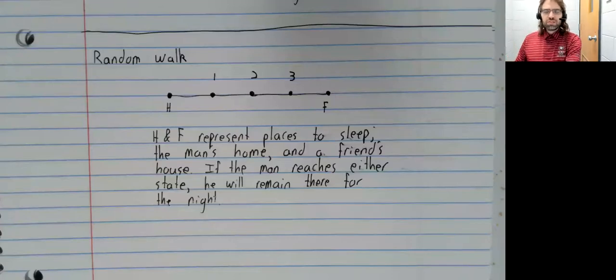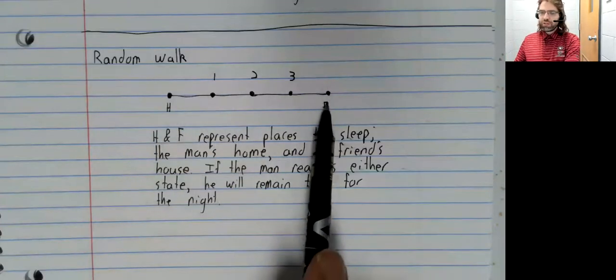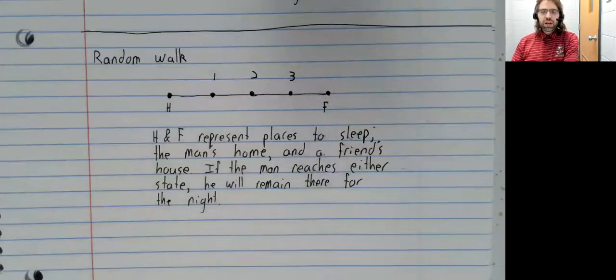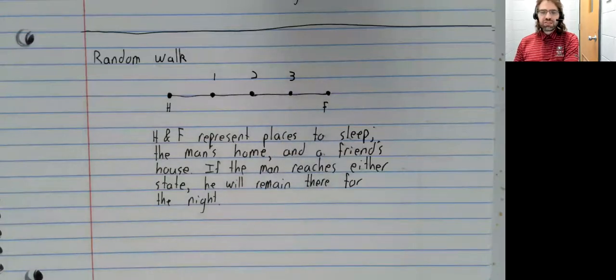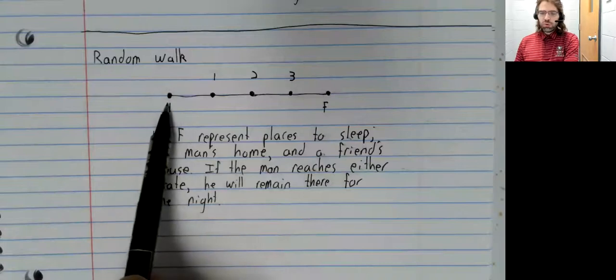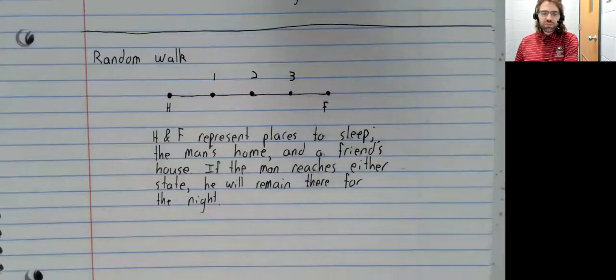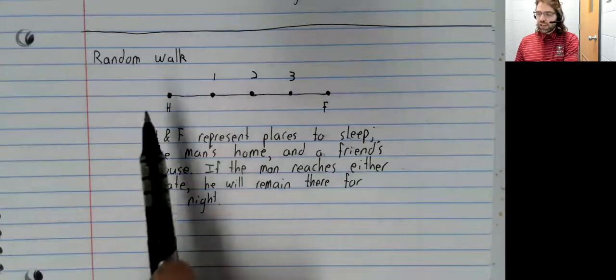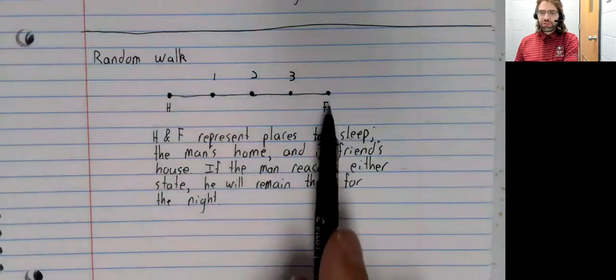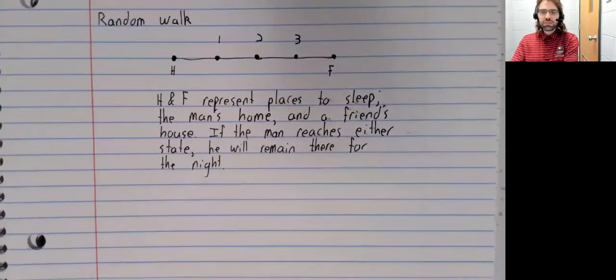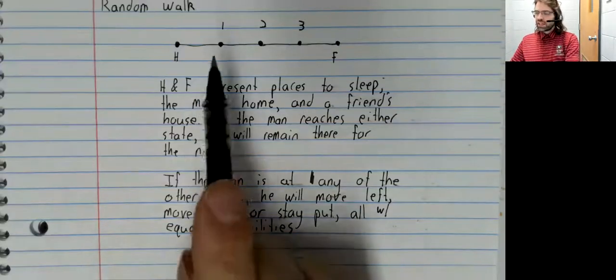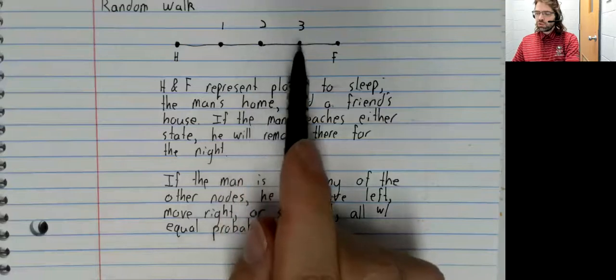And the rules of the random walk are as follows. Two of these states, H and F, are special. I've said that we're imagining a man walking up and down this street. But H and F represent places to sleep, the man's home or a friend's house. If the man reaches either H or F, he will stay there for the rest of the night.